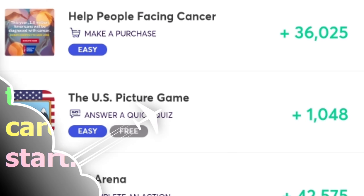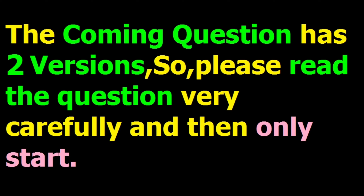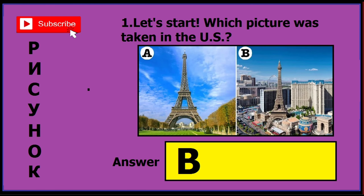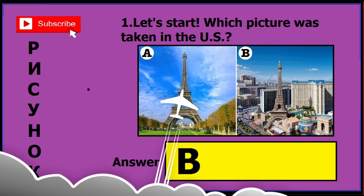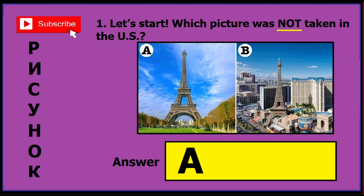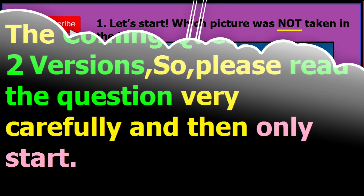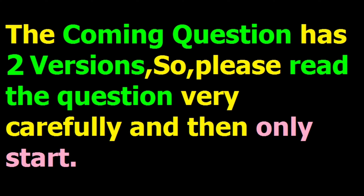Now let's start the quiz. This first question has two versions, so please read the question very carefully — the image is the same but the question is different. In version one, the question is 'which picture was taken in the US?' and the correct answer is B. In version two, the question is 'which picture was not taken in the US?' and the answer is A.